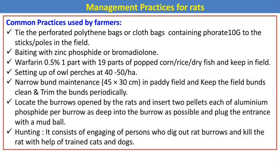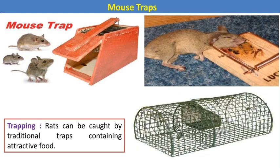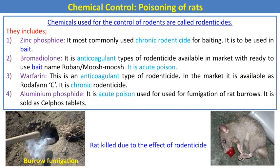For mechanical control, hunting consists of engaging persons who dig out rat burrows and kill rats with the help of trained cats and dogs. Different mouse traps can be used to catch rats using traditional traps baited with attractive food. In chemical control, chemicals used against rodents are called rodenticides — examples include zinc phosphide, bromadiolone, warfarin, and aluminum phosphide.